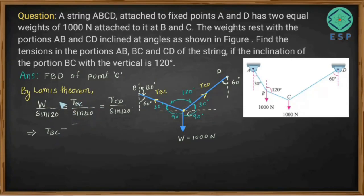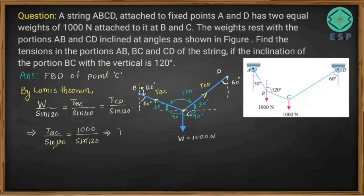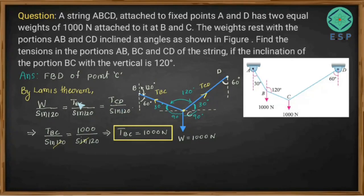So tension in BC divided by sine 120 equals weight divided by sine 120. Since sine 120 cancels out, tension in BC equals 1000 Newton. Similarly, tension in CD divided by sine 120 equals weight divided by sine 120, so tension in CD also equals 1000 Newton.